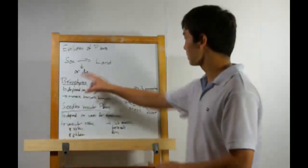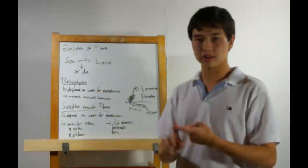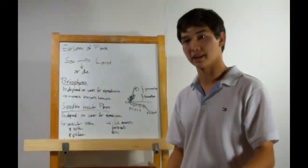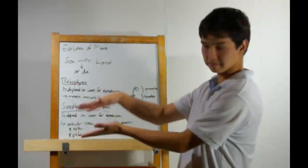The first plant to move onto land, the bryophytes. These include the mosses, the liverworts, and the hornworts. These depend on water for reproduction. That's why they don't grow so tall. About yea high.